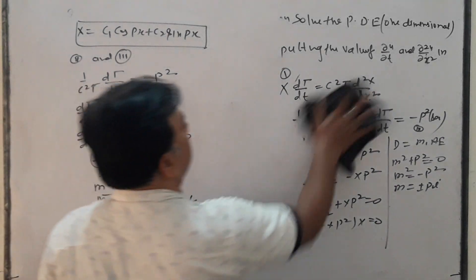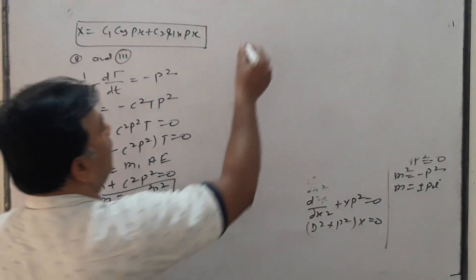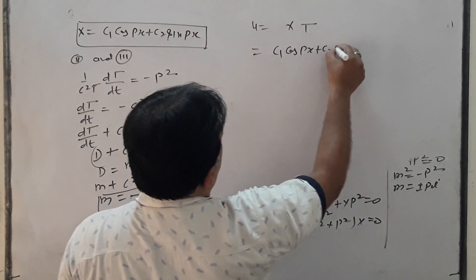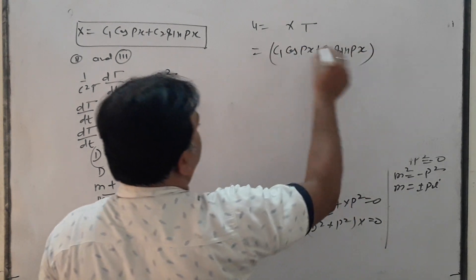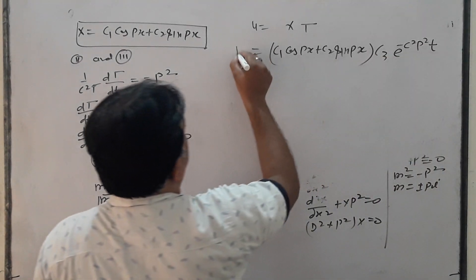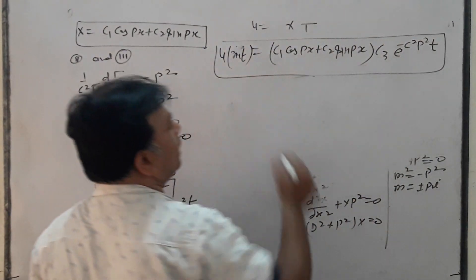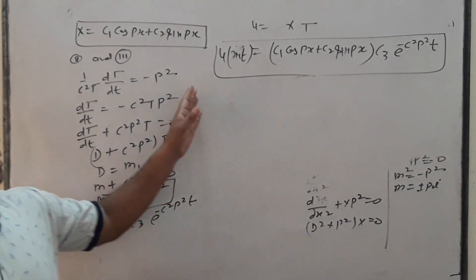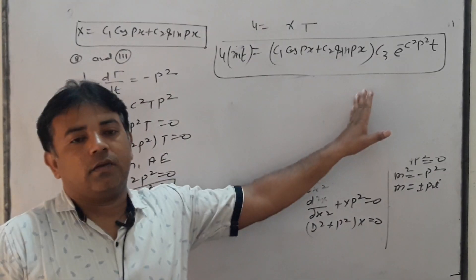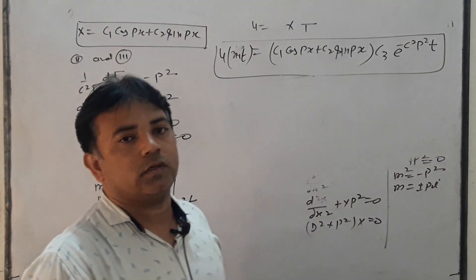The complete solution of this partial differential equation: since u = X · T, substituting the values gives u(x,t) = (c₁cos(px) + c₂sin(px)) · c₃ · e^(−c²p²t). This is the complete solution of the one-dimensional heat equation by the variable separation method. So u depends on x and t, and we have obtained its value in terms of x and t.